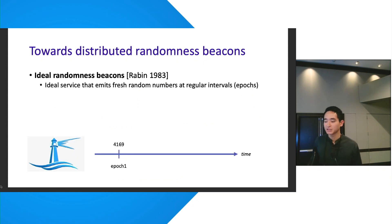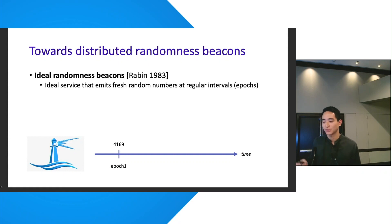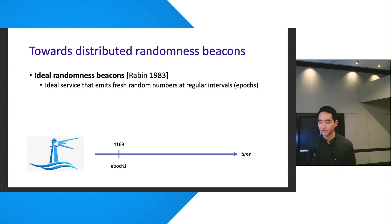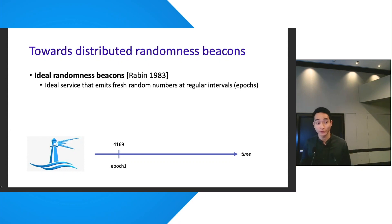In computer science, the concept of public trustworthy randomness that can be generated periodically was first formalized by Rabin in 1983 into what's called a randomness beacon — an ideal service that emits fresh random numbers at regular intervals, which we call epochs.